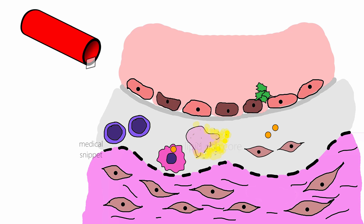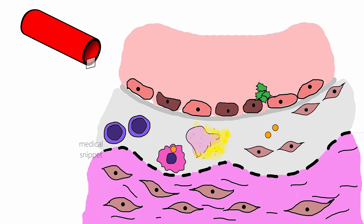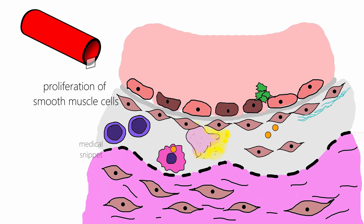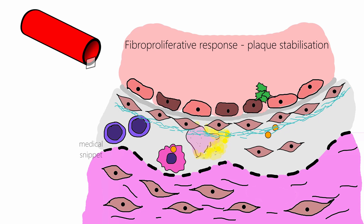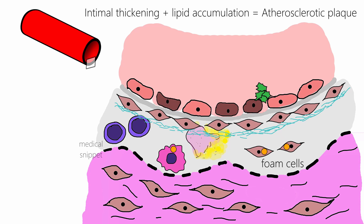The cytokines and chemokines secreted by macrophages also cause smooth muscle migration from the media into the intima. The migrated smooth muscle cells in the intima have proliferative and synthetic properties, which is absent in medial smooth muscle cells. In the intima, these smooth muscle cells proliferate and secrete extracellular matrix substances like collagen. This fibro-proliferative response by smooth muscle cells stabilizes the plaque. It should be noted that the migrated smooth muscle cells can also engulf intimal lipids to form foam cells. The intimal thickening by the fibro-proliferative response along with lipid accumulation results in atherosclerotic plaque formation.